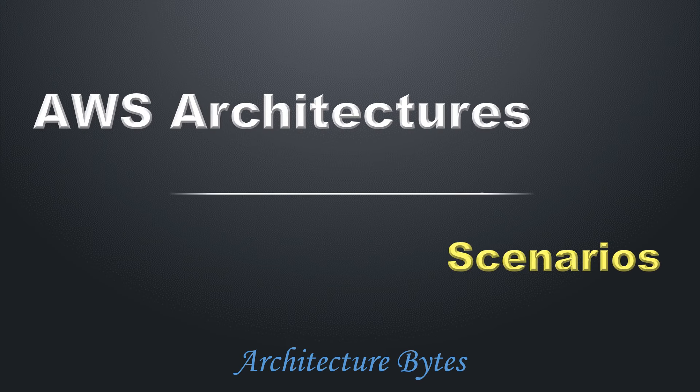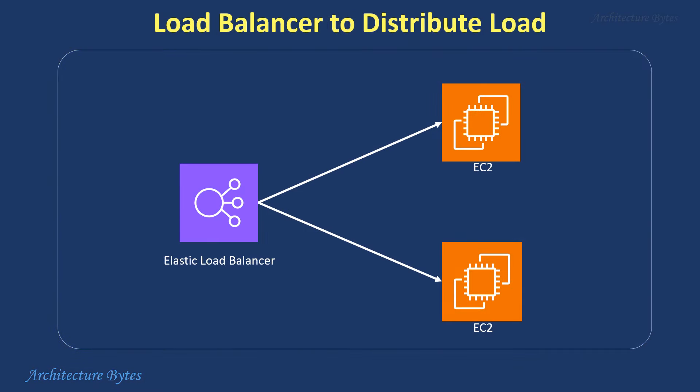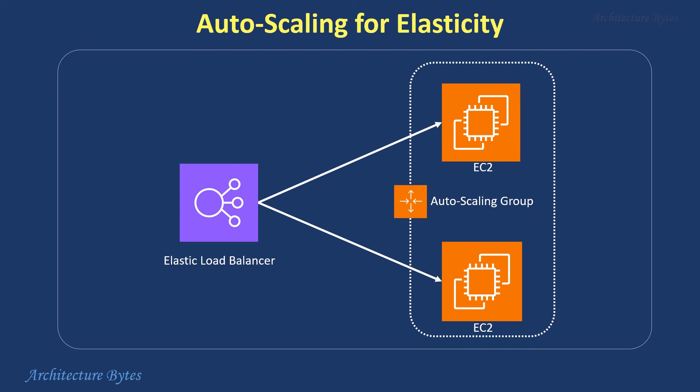AWS Architectures. How would you design a highly available and scalable architecture for a web application deployed on EC2? We will use an elastic load balancer to distribute incoming traffic across multiple instances to ensure high availability and fault tolerance. Set up an autoscaling group to automatically adjust the number of EC2 instances based on traffic demand.